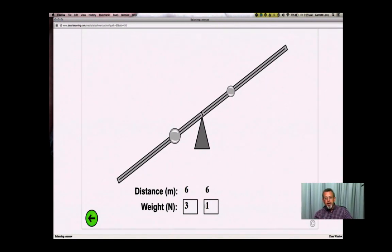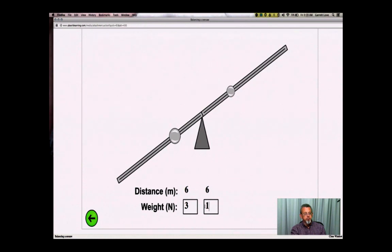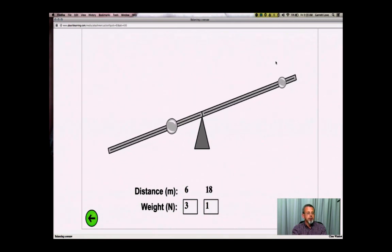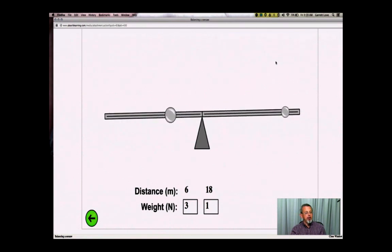I put the heavier weight at 6 and the lighter weight at 18. So we did 6 and 18. Let's see here. 6 and 18. Hey, that balanced out.